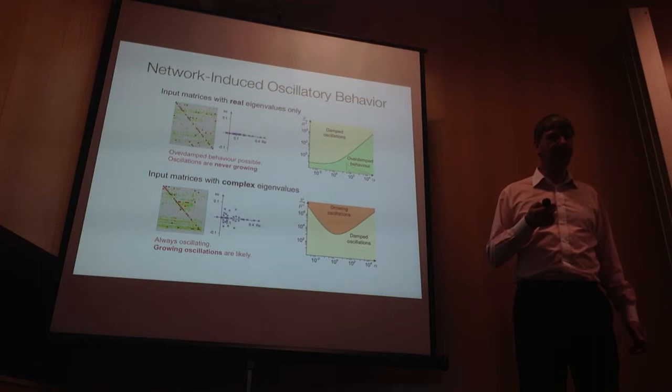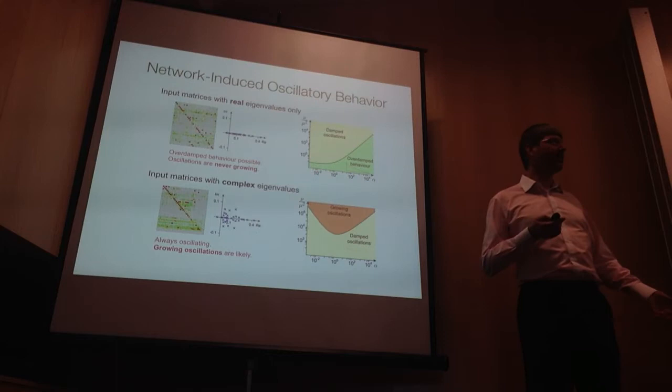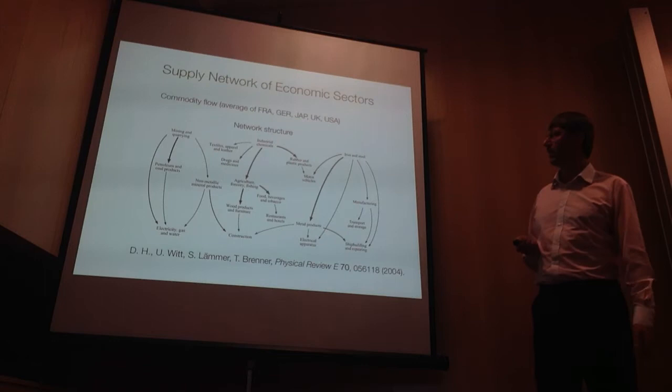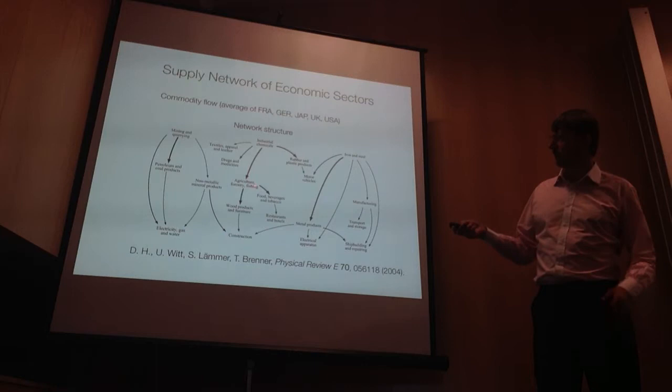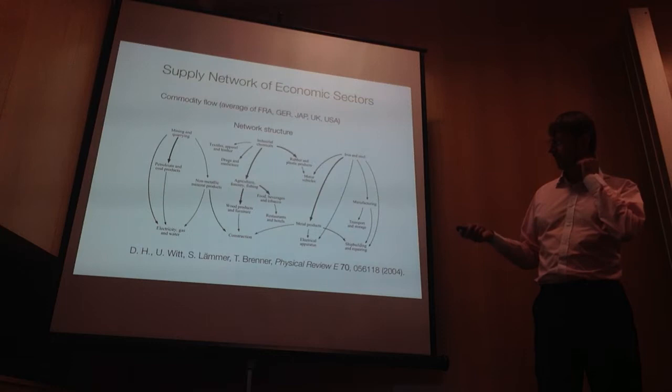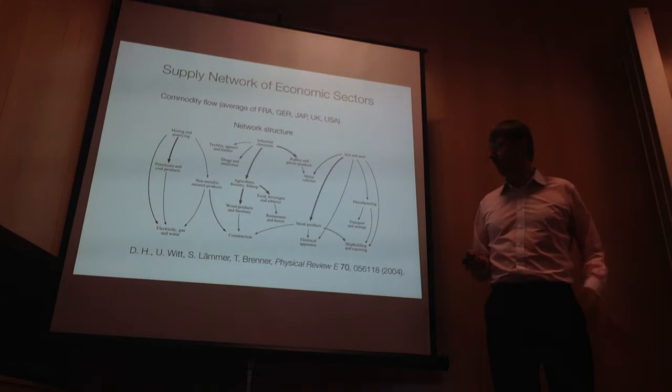The question is: what will happen for a realistic supply network of the world? We've looked into this — there are data, including input-output matrices for world production. As you can see, industrial chemicals go into agriculture and then into wood production and construction, or agriculture goes into food production, restaurants, and so on. The supply chains are well mapped out here.